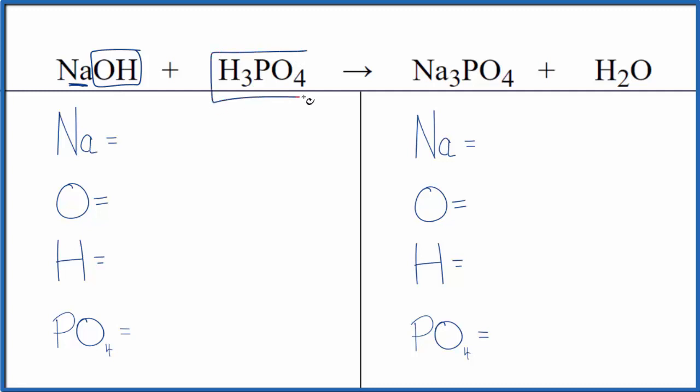This is phosphoric acid, so we have an acid and a base. We end up with this salt, sodium phosphate, and water. This is a neutralization reaction. You could also call this a double displacement reaction as well.